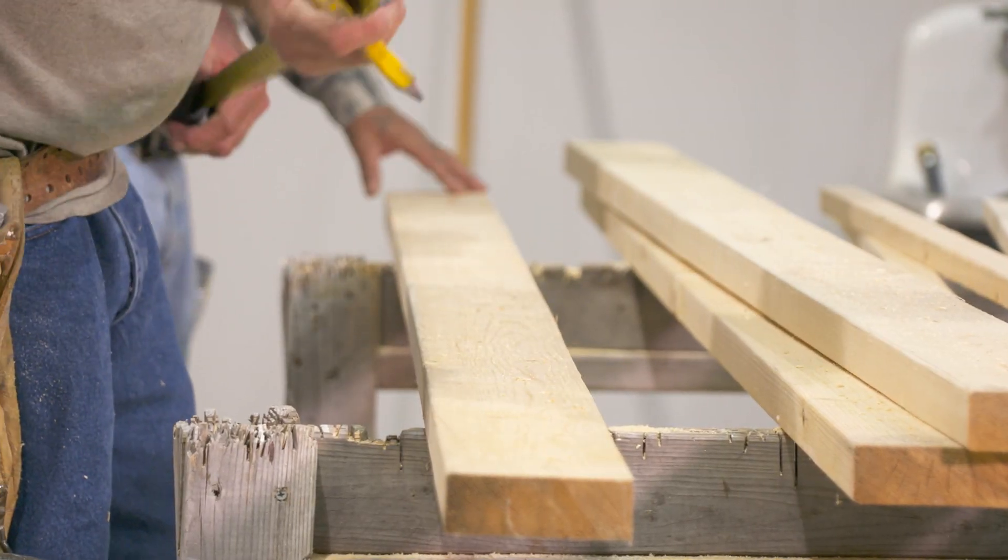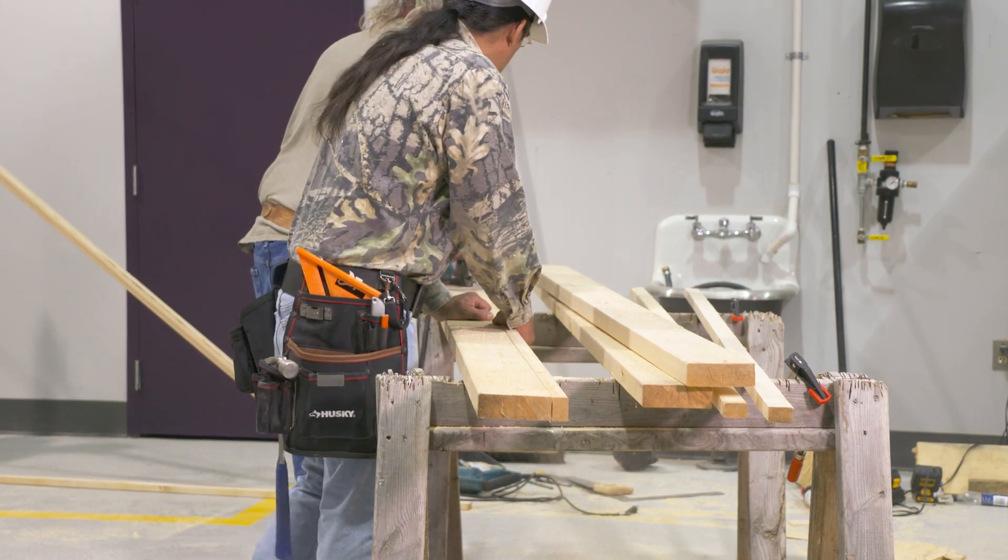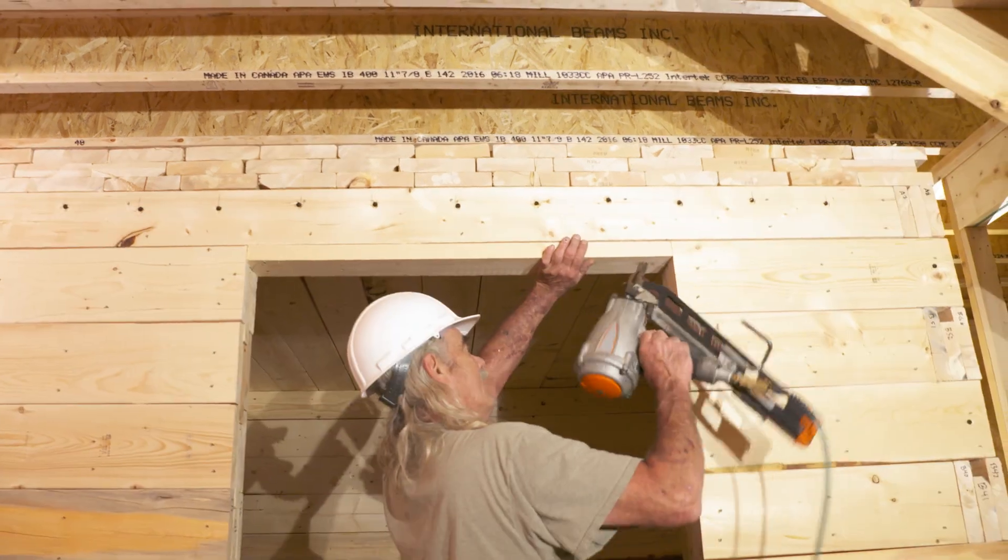Each 2x6 is cross cut to fit the dimensions of the entrance and then rip cut to a width of 4.5 inches to match the width of the wall. The door jams are nailed and glued to the wall beams.